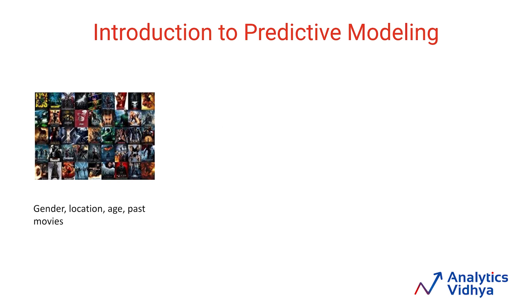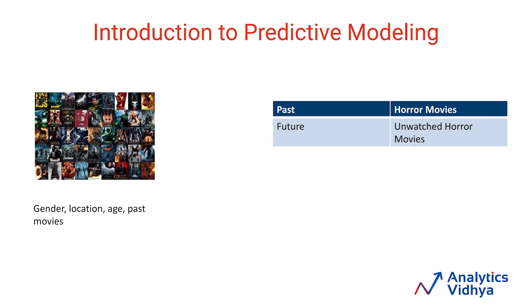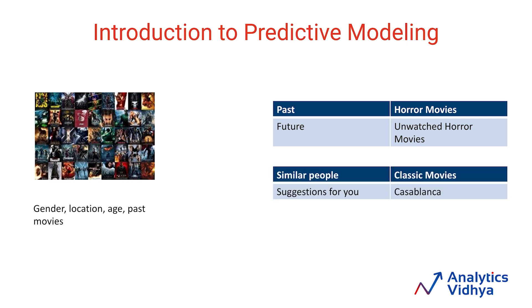Let's start with recommending movies to users according to some of their characteristics. This task can be done in two ways. First, a user has watched a lot of horror movies in the past, so it makes sense to suggest a horror movie in the near future. Second, people who are very similar to the user in terms of age, sex, and location prefer classic movies, then it is a good choice to suggest a classic movie. Since both methods require analysis of past data and making predictions for the future, this is a predictive modeling task.